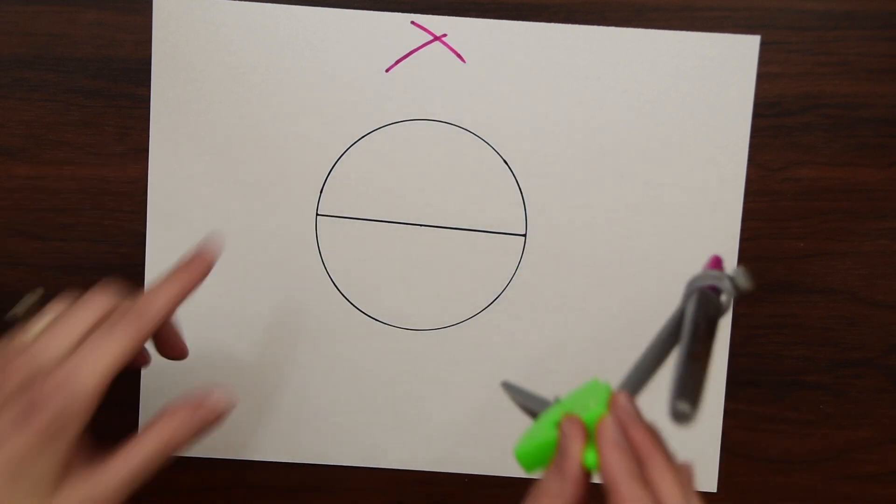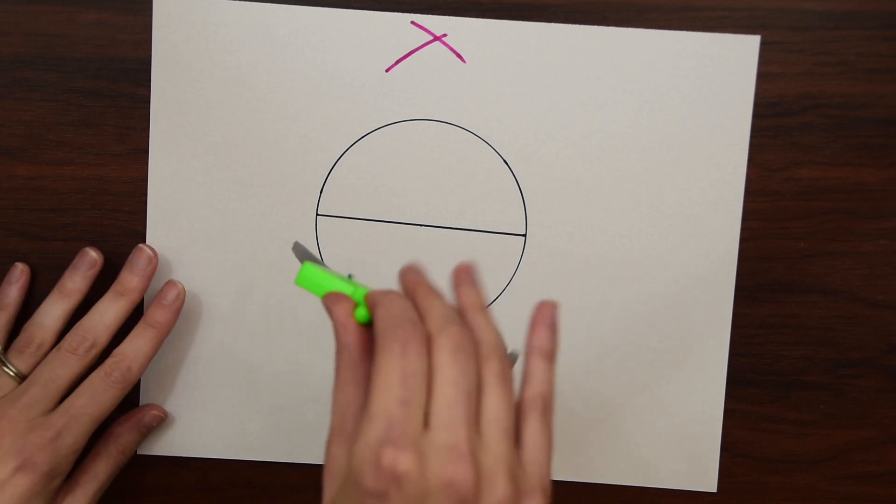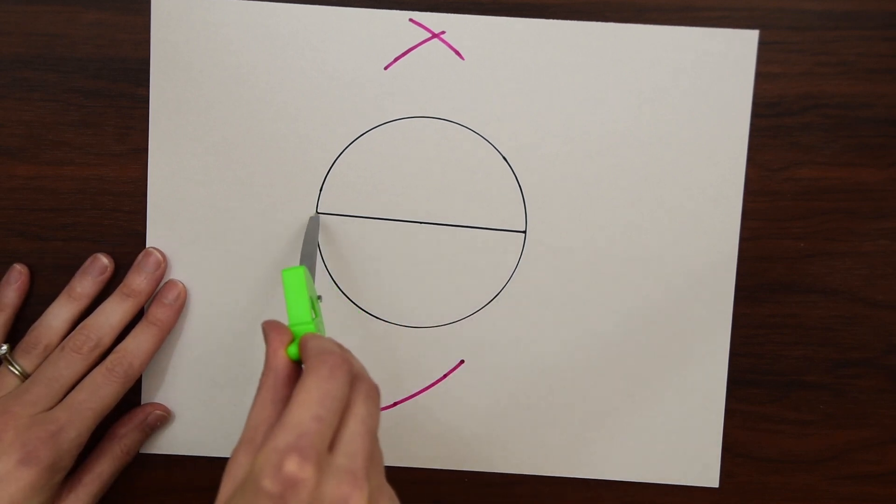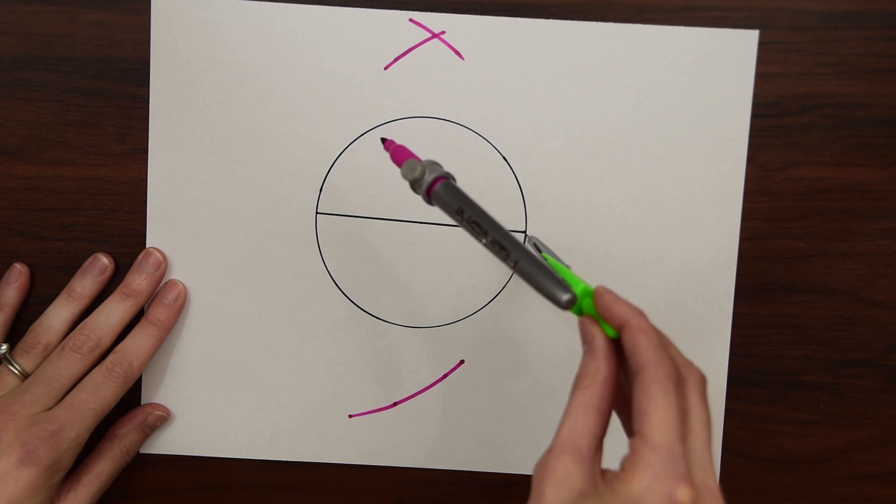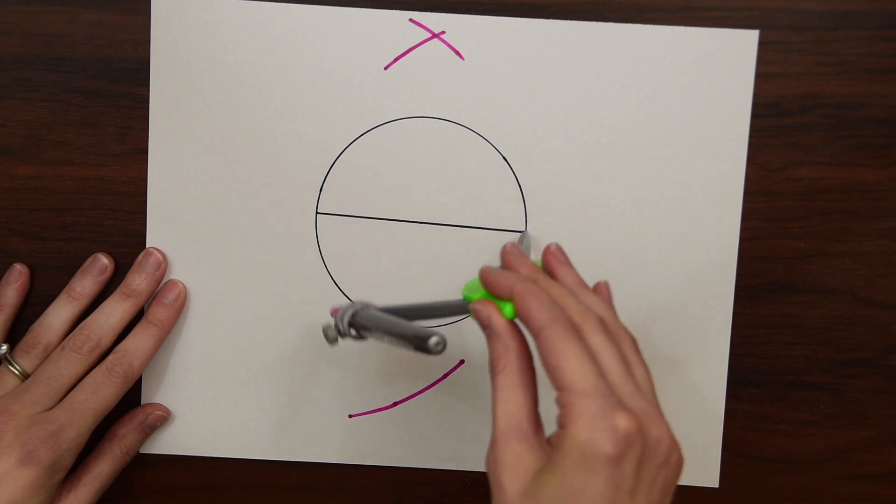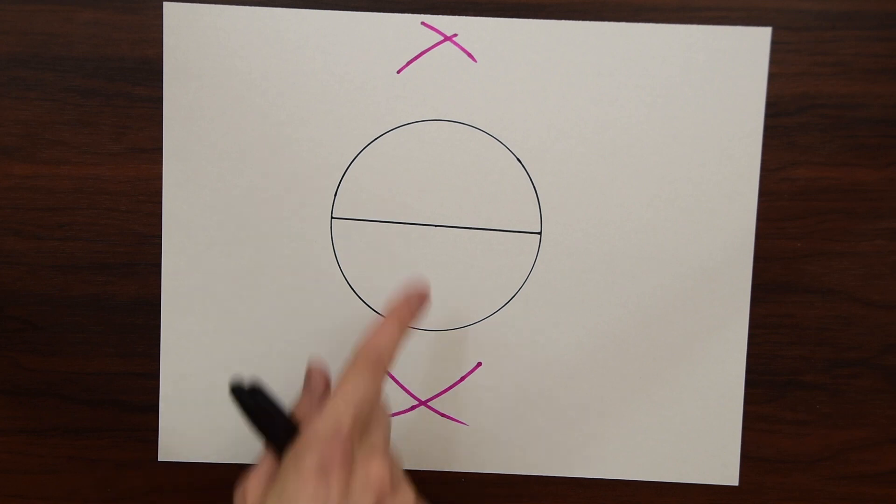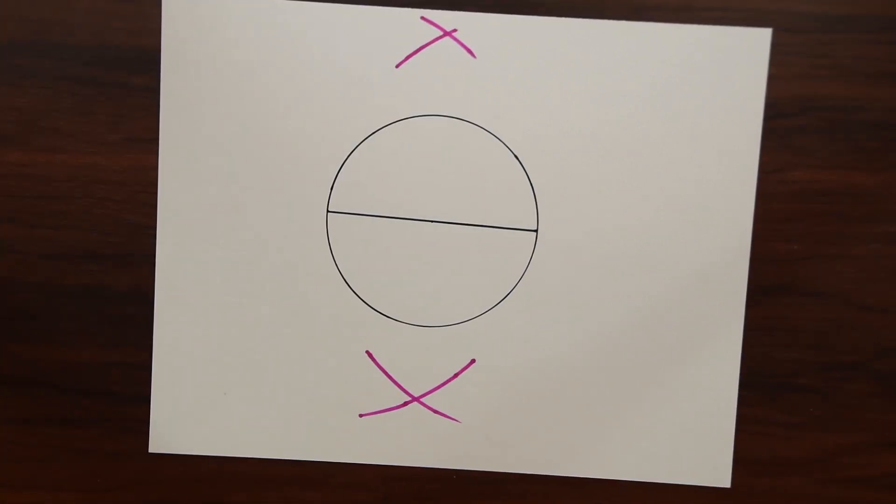So now we're gonna do the same thing below the circle. We're gonna take the point to one side and make a little arc and then do the same thing on this side. Notice we made an intersection here and an intersection here, so above and below the circle.